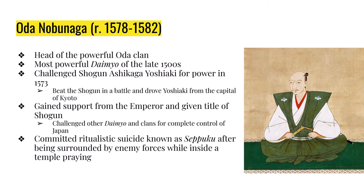After gaining the support of the emperor, Nobunaga continued to challenge other daimyo and clans for control of Japan. During this fighting, Nobunaga is forced to commit ritualistic suicide, better known as seppuku, where he is surrounded by enemy forces inside a temple while praying. Seppuku involves taking your sword and cutting yourself in a pattern from one end of your stomach to the other — your insides become your outsides. It was considered more respectful and loyal to go out that way than to be killed by your enemy.